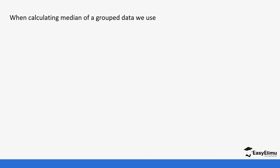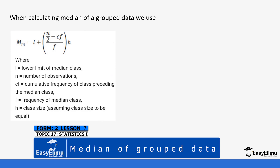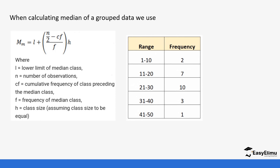Today we are going to calculate the median of grouped data. Remember previously we said that median is the middle value. If you have an even number of values you pick the n/2 and (n+1)/2 values; if it's an odd number it's just the n/2 value. Since this is grouped data, it becomes more complicated because the value is in a range or class boundary, so you need a formula.